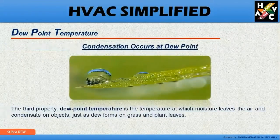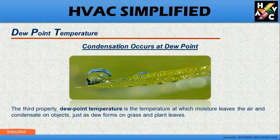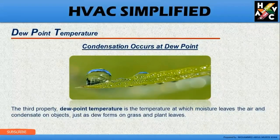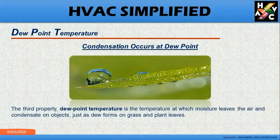Dew point temperature. The dew point temperature is the temperature at which moisture leaves the air and condenses on objects, just as dew forms on a plant. In simple words, the dew point temperature is the temperature at which water droplets start condensing — meaning the air can no longer hold the moisture in it. We will understand why this happens in further slides.